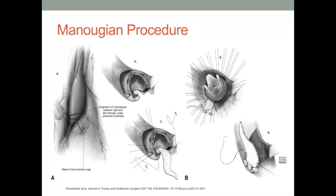The Manouguian incision, as previously described, provides the surgeon with another well-accepted posterior enlargement technique. This incision is placed through the mid portion of the non-coronary sinus. One can appreciate the geometric relationship between where the incision is initiated and the extent of its length through the base of the non-coronary cusp, as well as the internal depiction of the incision. A general representation of patch followed by prosthesis placement in regards to reconstruction will be described in greater detail within the next few slides.